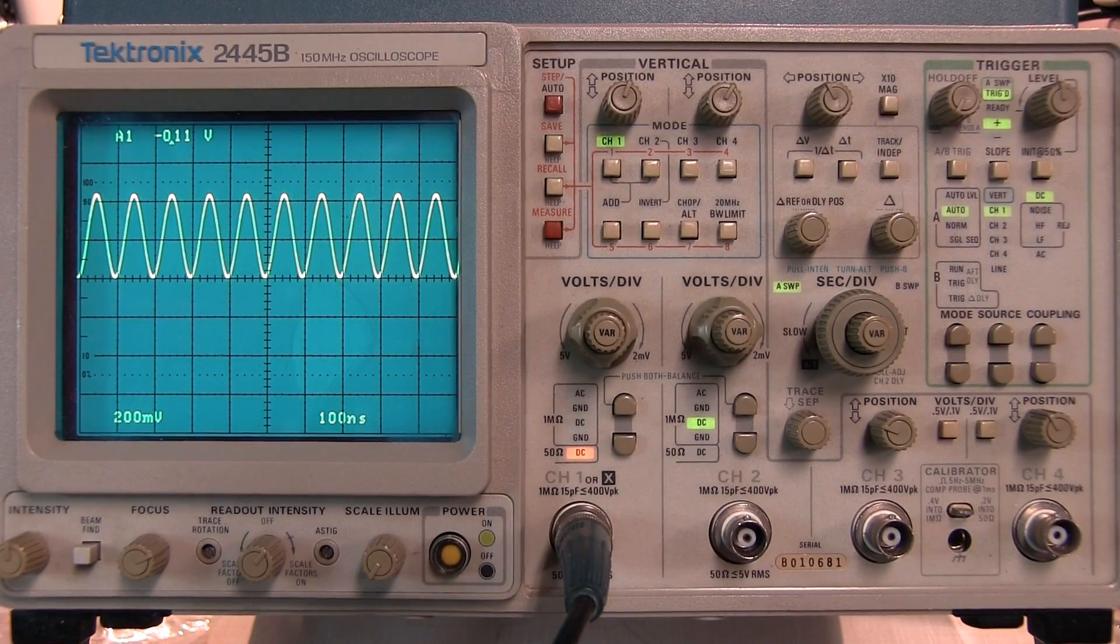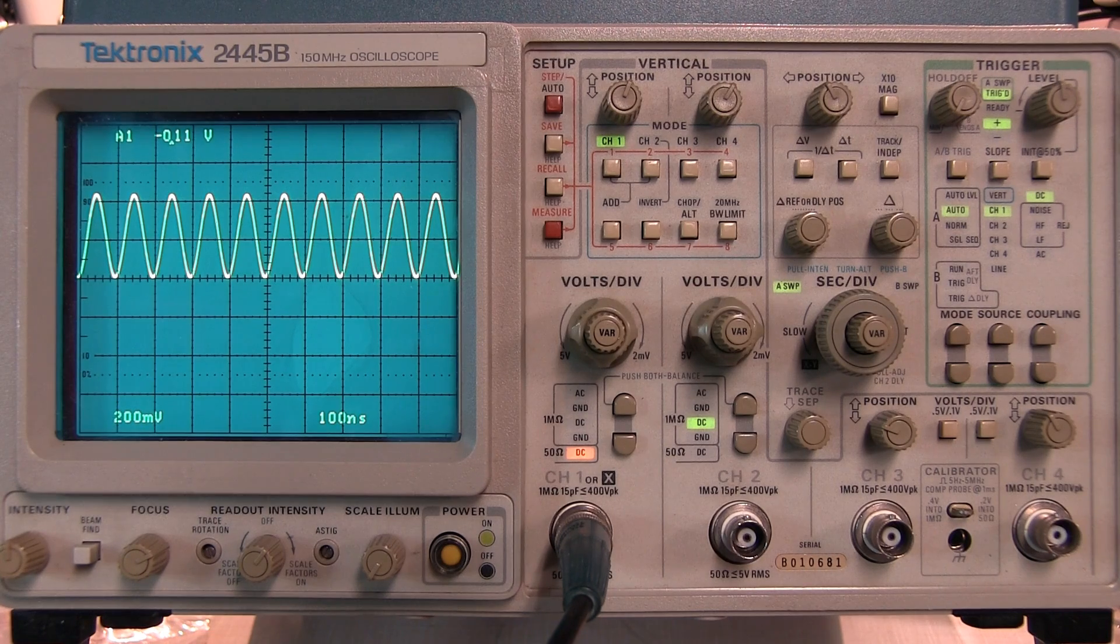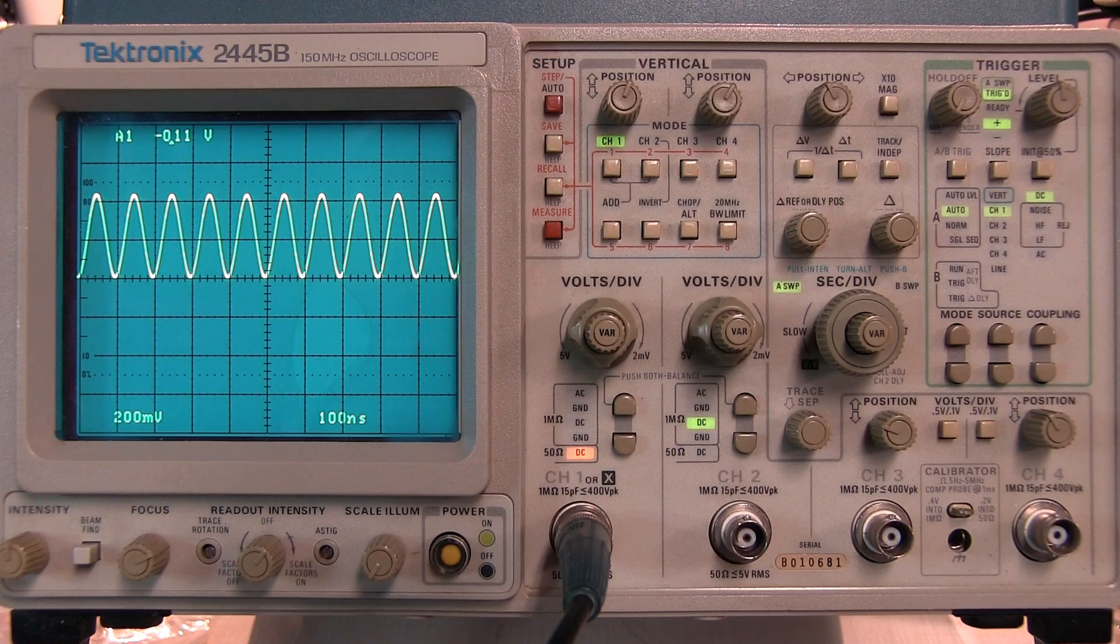Now of course with modern digital scopes zooming in on an area of a waveform is very easy. Back in the days before we had digital scopes we had to use things like the delayed time base.